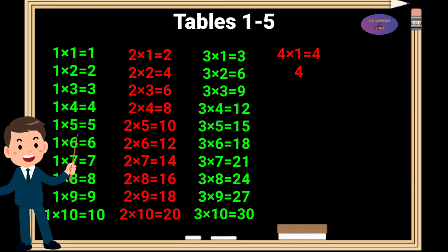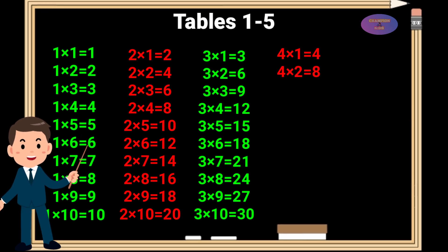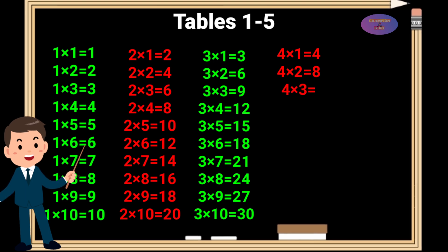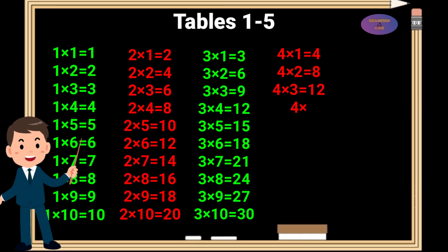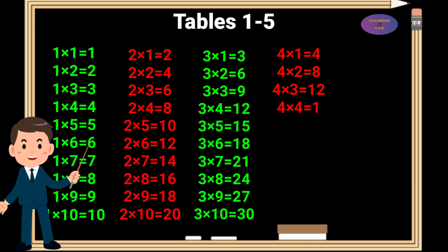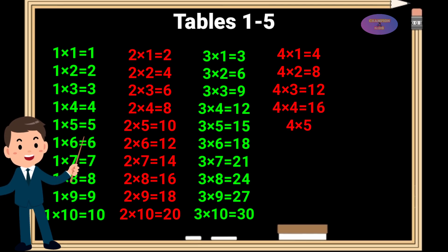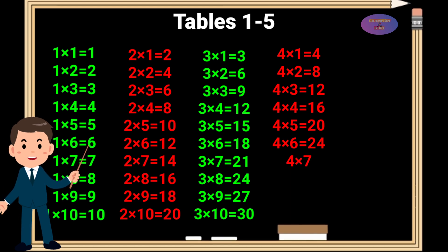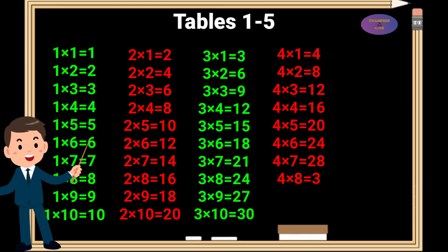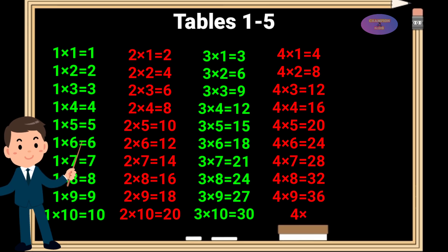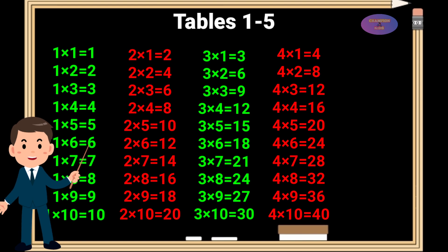4 times 1 is 4, 4 times 2 is 8, 4 times 3 is 12, 4 times 4 is 16, 4 times 5 is 20, 4 times 6 is 24, 4 times 7 is 28, 4 times 8 is 32, 4 times 9 is 36, 4 times 10 is 40.